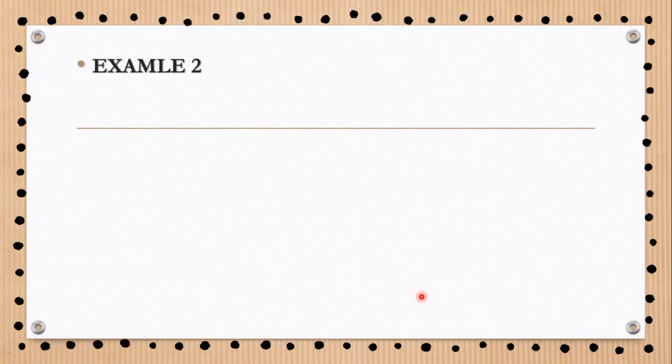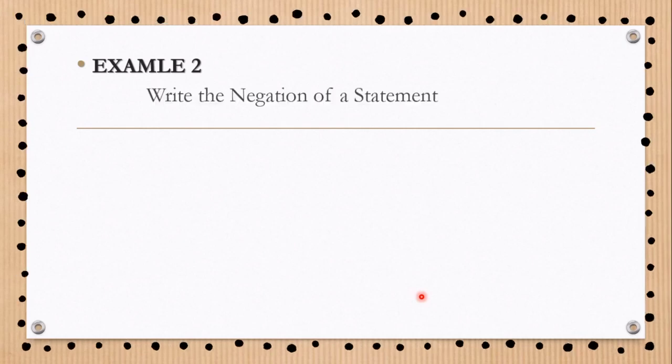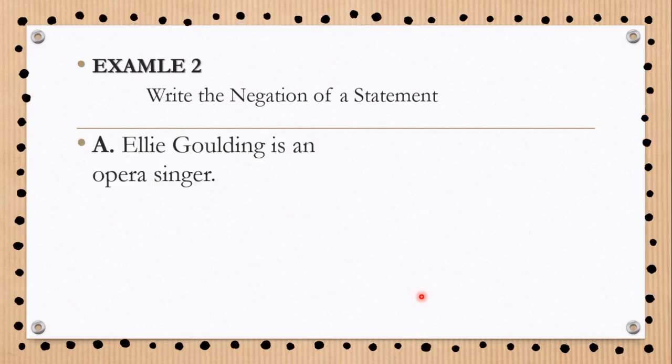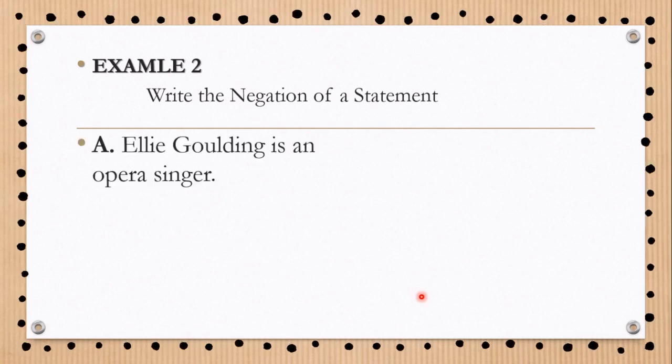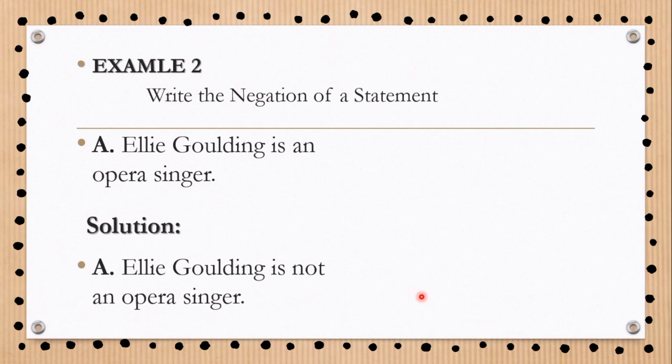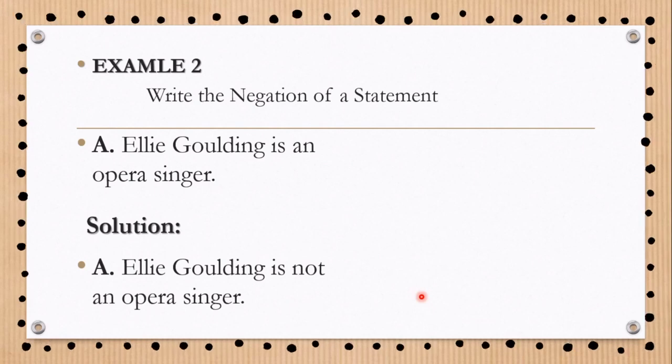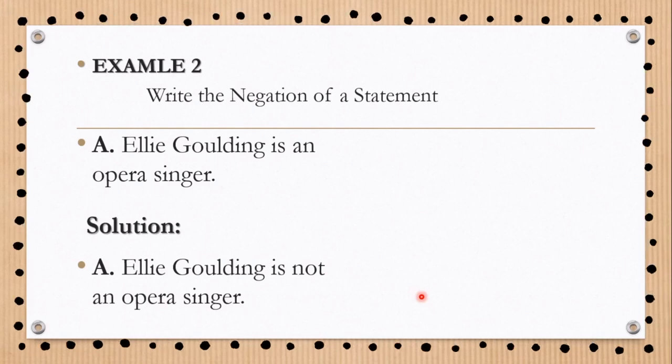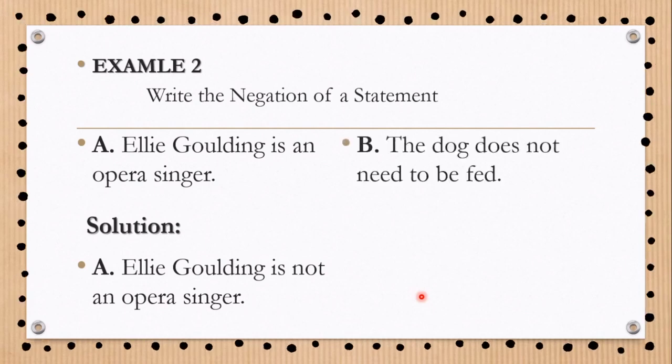Let's try example 2. Write the negation of a statement. A: Ellie Goulding is an opera singer. Solution: A: Ellie Goulding is not an opera singer.